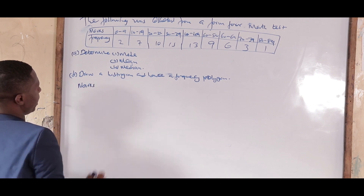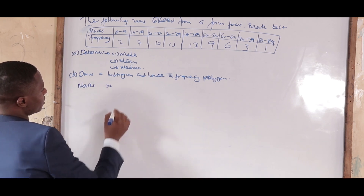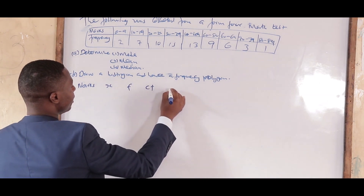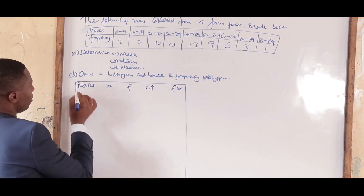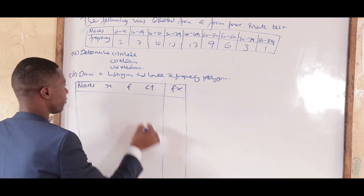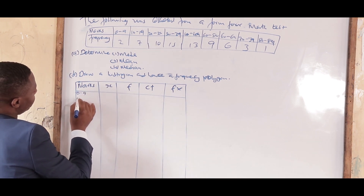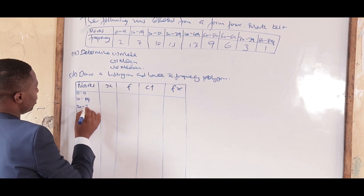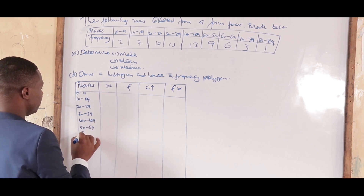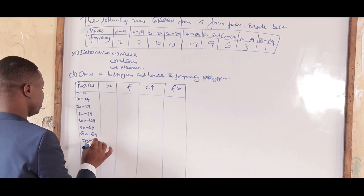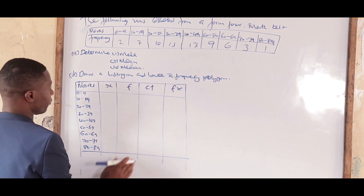Our table has the following columns: marks, midpoint (x), frequency (f), cumulative frequency (cf), and fx. The class intervals are: 0–9, 10–19, 20–29, 30–39, 40–49, 50–59, 60–69, 70–79, and 80–89.